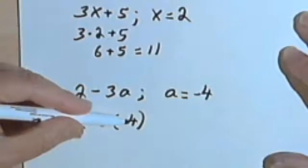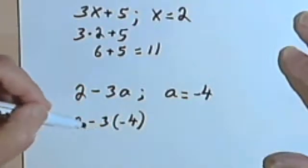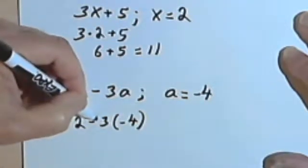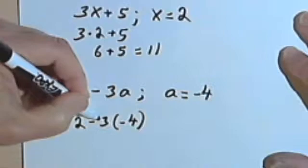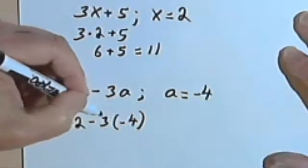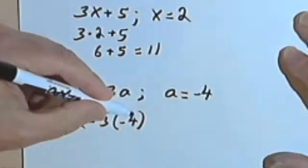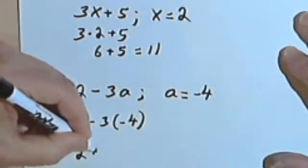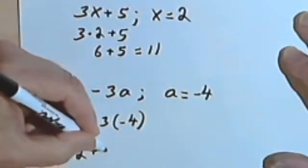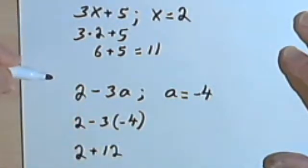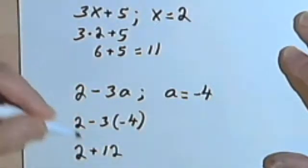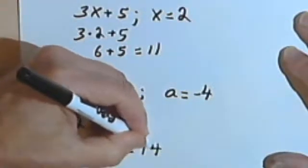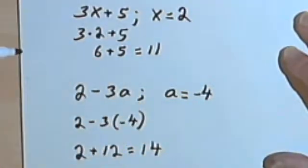I want to do my multiplication before I do the subtraction. So I've got negative 3 times negative 4. Negative times a negative is a positive, so that means I'm going to get 2 plus 12, and 2 plus 12 will be 14.